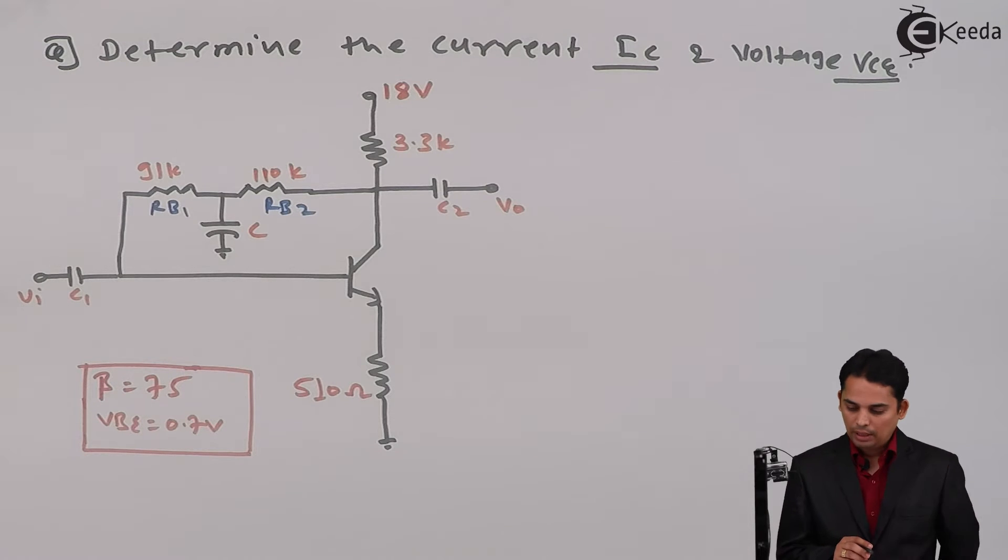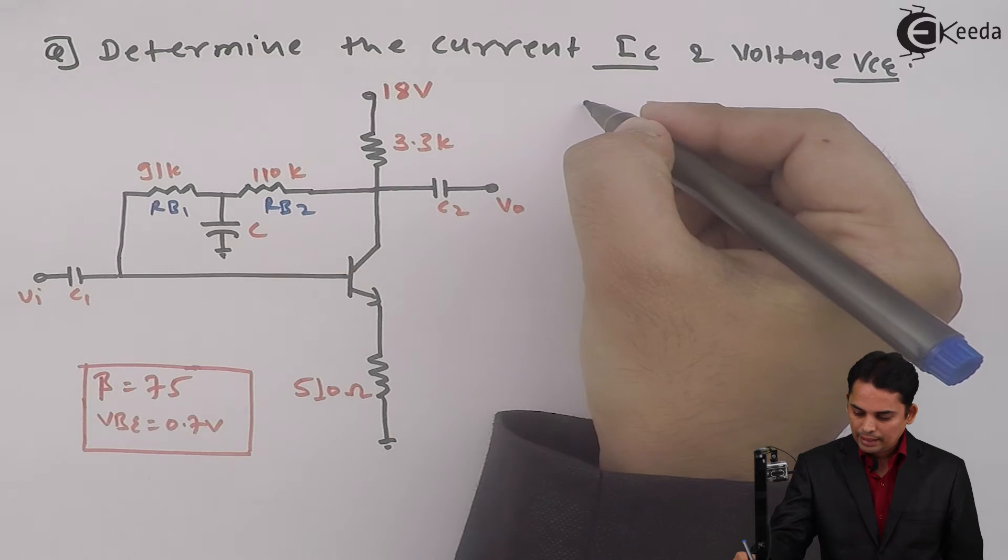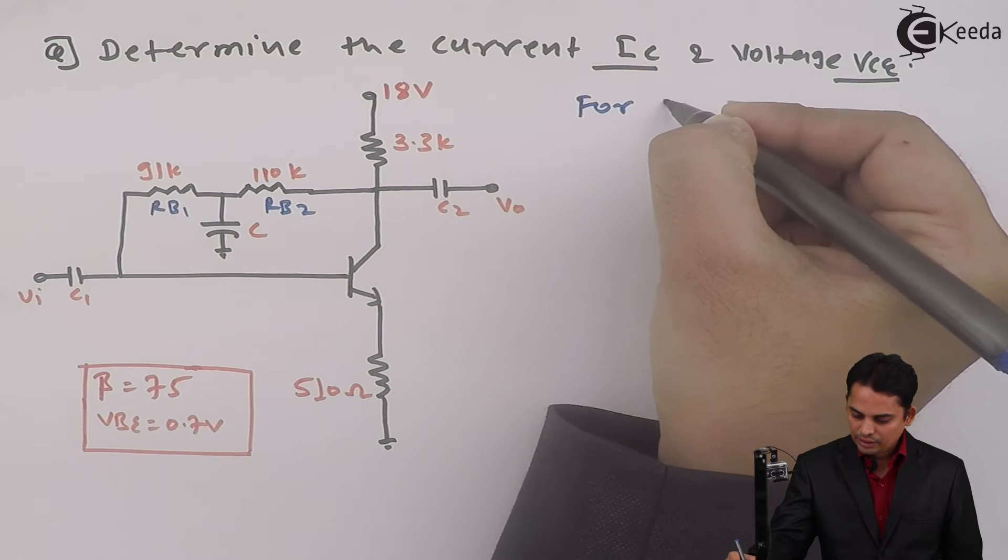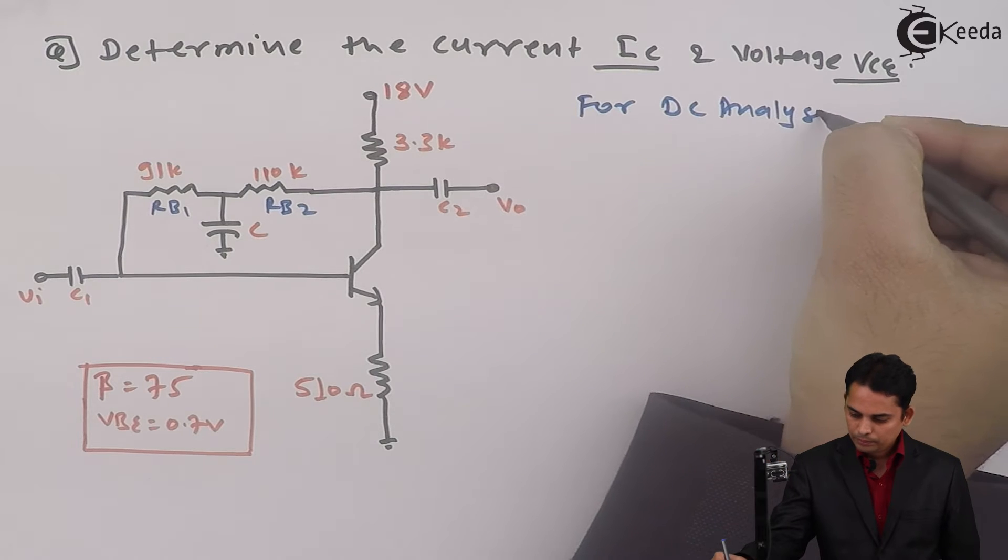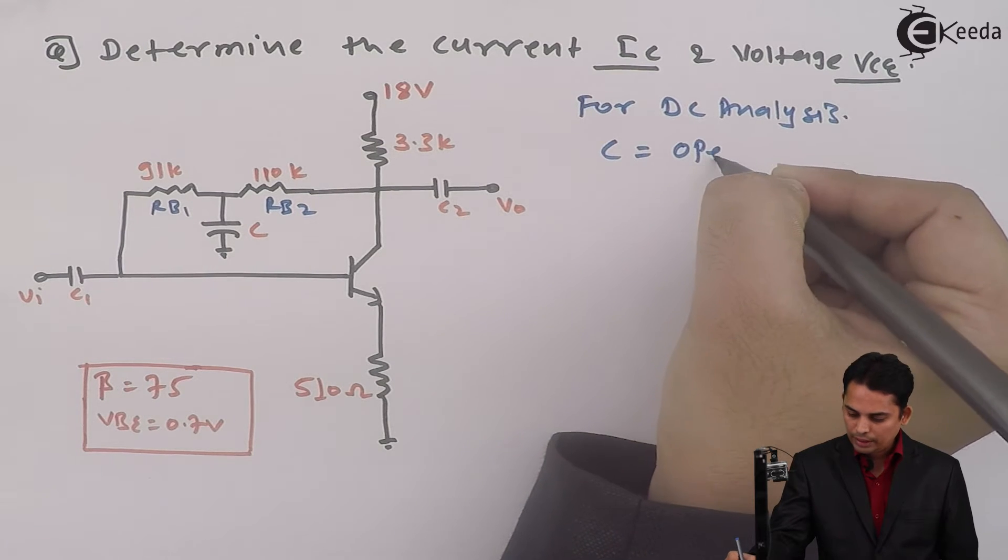It's very simple. When they have asked you to find out only current and voltage, that means it is nothing but DC analysis. The very first point I come to know is that I need to perform DC analysis. While performing DC analysis, capacitors are open circuited. So, I will write that for DC analysis, capacitors are open circuited.